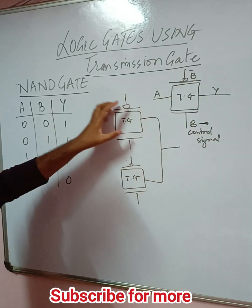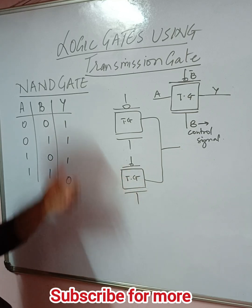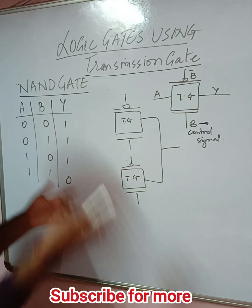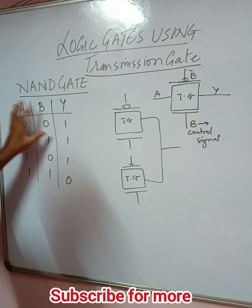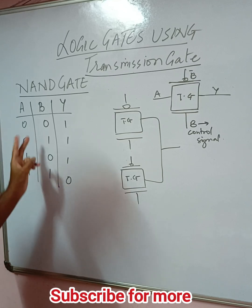The number of transmission gates to be used while constructing a NAND gate depends upon the inputs. We have here a two input truth table, so we will be having two inputs.